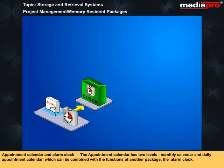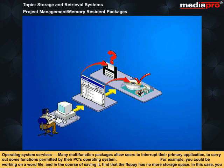An appointment calendar and alarm clock: the appointment calendar has two levels — a monthly calendar and a daily appointment calendar — which can be combined with the functions of an alarm clock package. Many multi-function packages allow users to interrupt their primary application to carry out some functions permitted by their PC's operating system. For example, you could be working on a word file and in the course of saving it, find that the floppy has no more storage space. In this case, you may call upon the operating system to delete files or move them elsewhere to accommodate the current file.